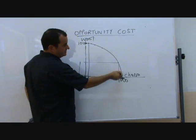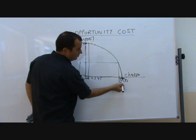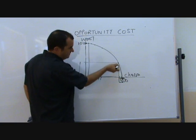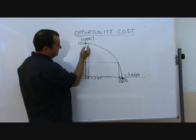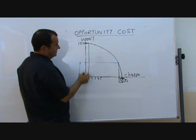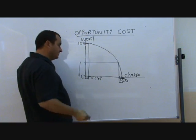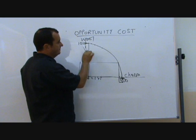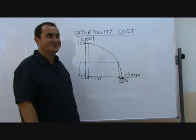You can see why. The gradient is much steeper here. To move the same distance across requires a much bigger drop in wool production. Whereas here, where the gradient was very shallow, that didn't occur. So that's much more realistic—a concave PPF.